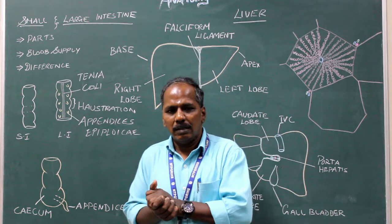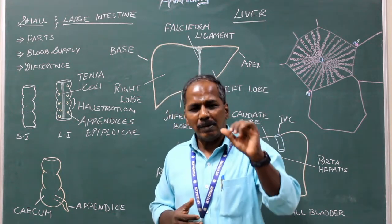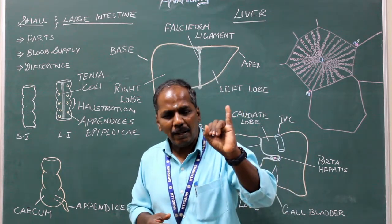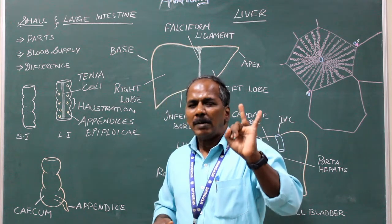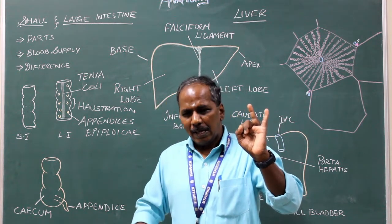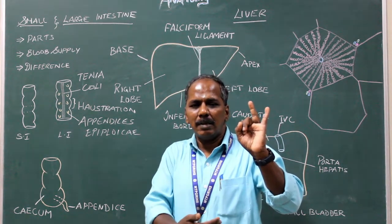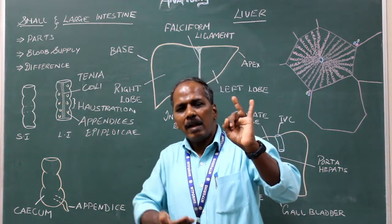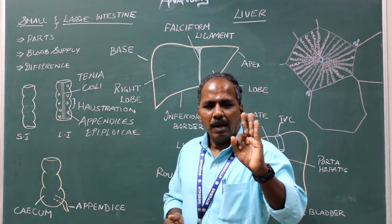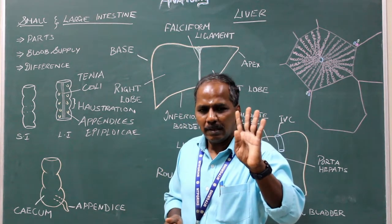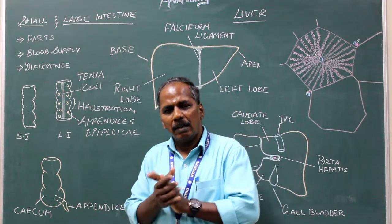Large intestine. The parts of the large intestine are: number one, cecum and appendix; number two, colon — which constitutes the ascending colon, transverse colon, descending colon, and sigmoid colon; number three, rectum; and the last one is the anal canal.